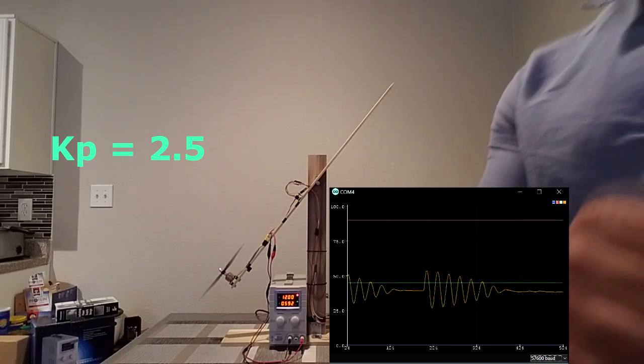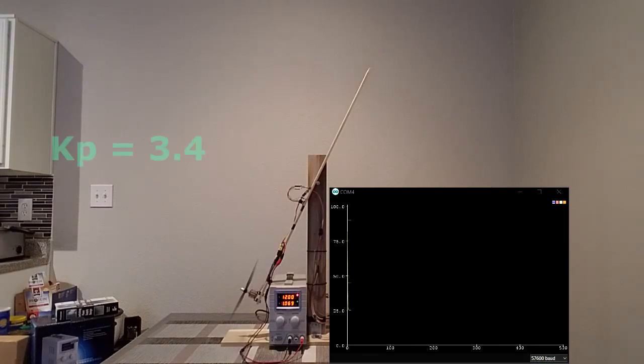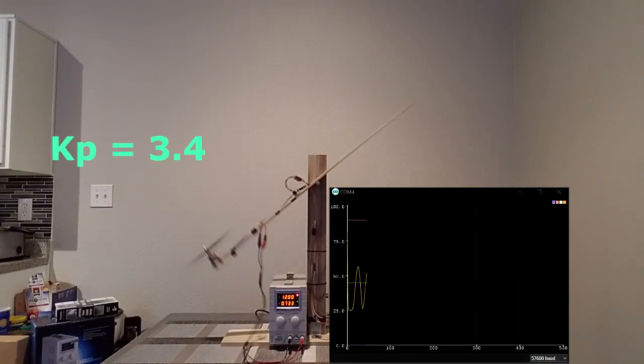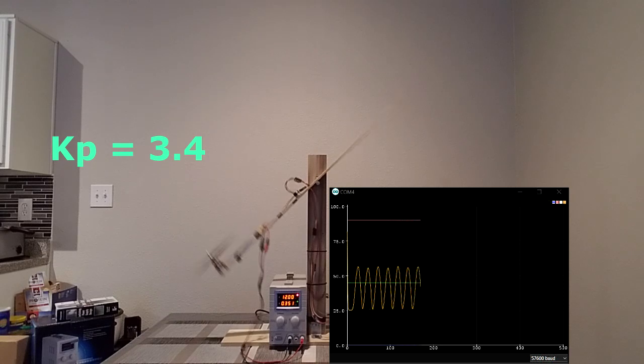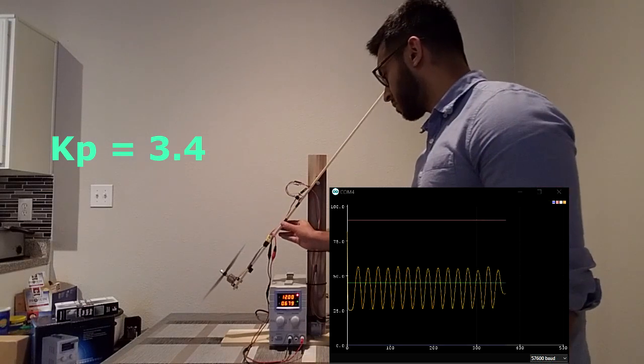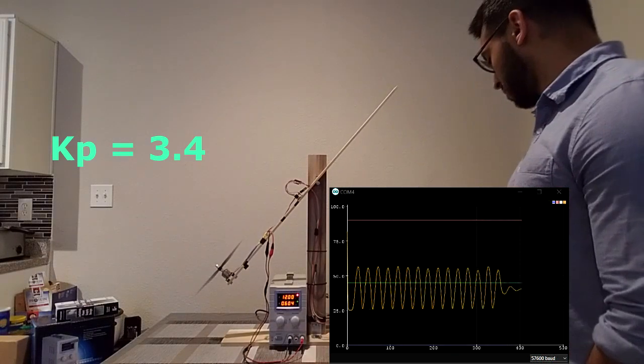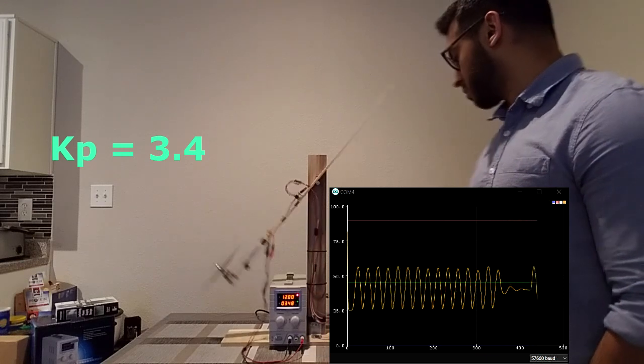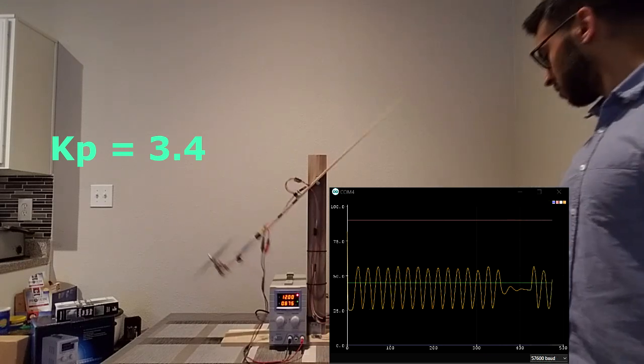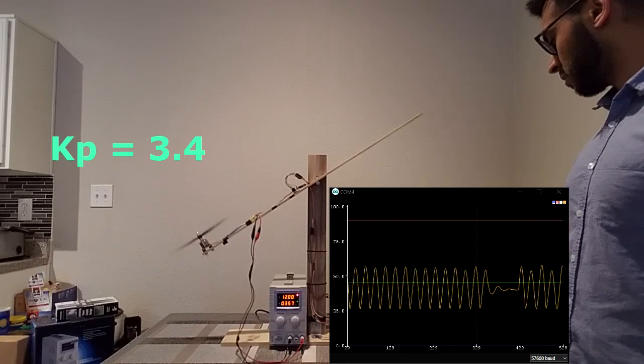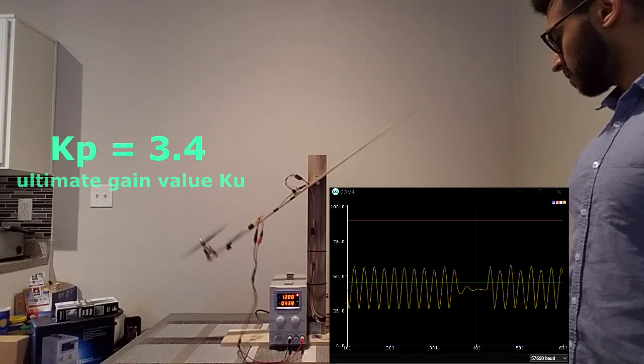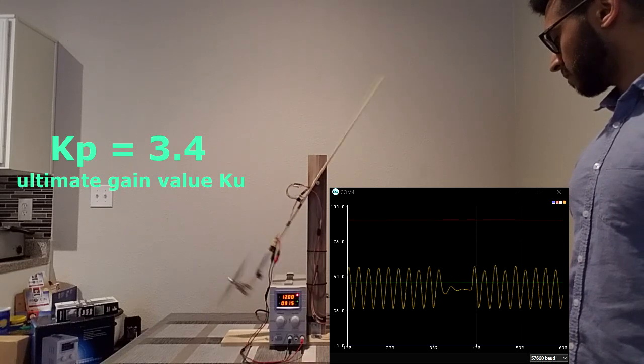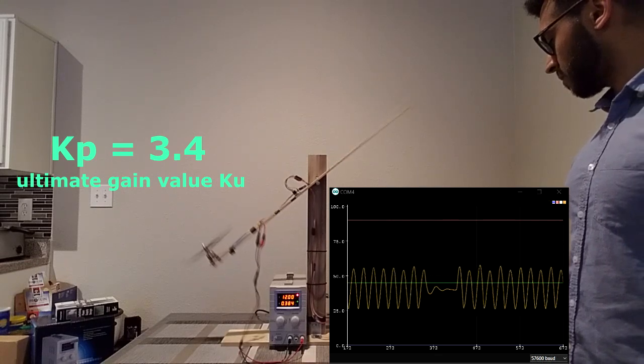Now I keep doing this iteration until I get to Kp equals 3.4. Now upon the startup and adding disturbance, we can see that it's oscillating consistently. We now have our ultimate gain value of 3.4. Now we need to know the period of this oscillation.